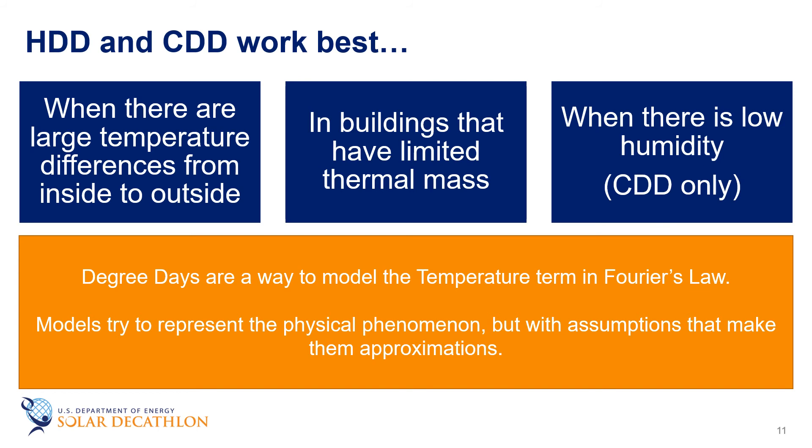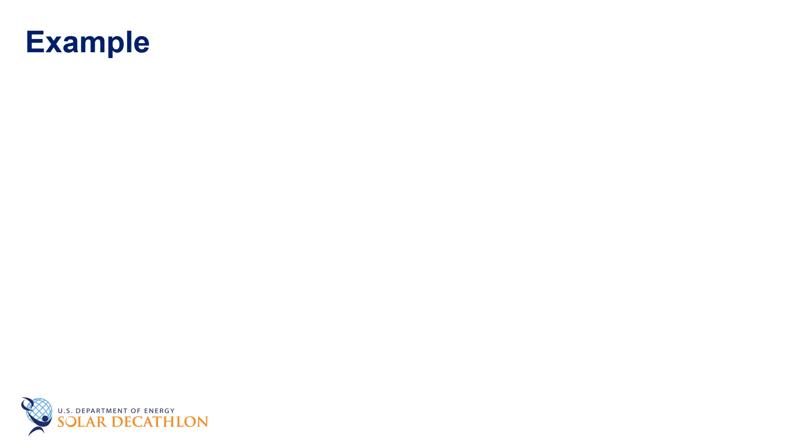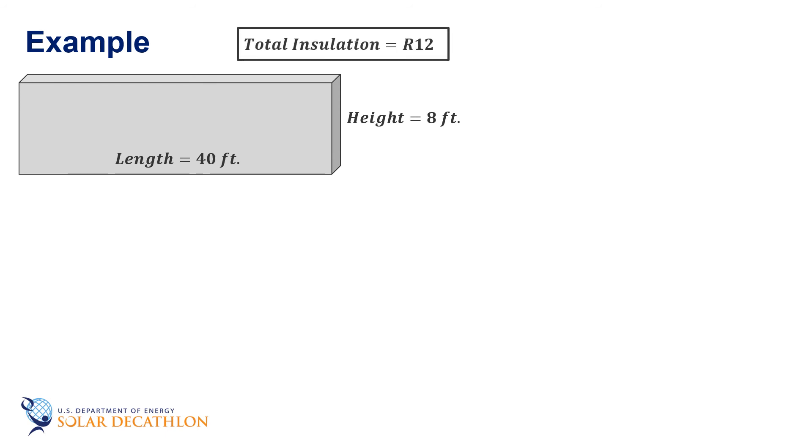Computerized energy models can account for many of these complexities. Now for an example. Consider a wall that is 40 feet long and 8 feet high. The total insulation of the wall is R12 and it is located in a climate with 6100 degree F days per year. Approximately, how much heat leaves the building through this wall.